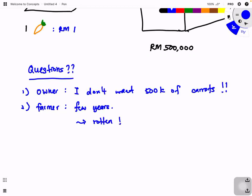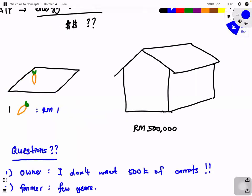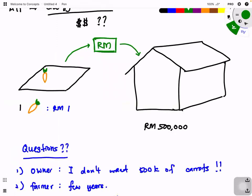Instead of exchanging carrots directly for the house, what we do is sell the carrots and gain money first, then pay the owner with money. The owner is happy - they do not need to store 500,000 carrots. This is called currency. In our body, we constantly face the same kind of problem.